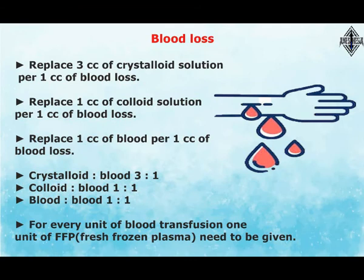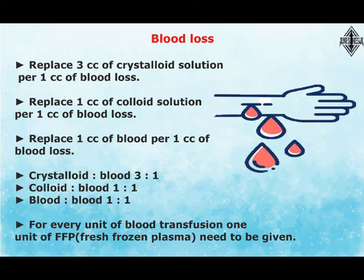Blood loss replacement: replace 3 cc of crystalloid solution per 1 cc of blood loss; replace 1 cc of colloid solution per 1 cc of blood loss; replace 1 cc of blood per 1 cc of blood loss. In summary: crystalloid to blood ratio is 3:1, colloid to blood is 1:1, and blood to blood is 1:1. For every unit of blood transfusion, one unit of FFP (fresh frozen plasma) should also be given.